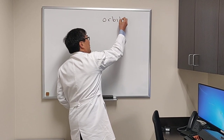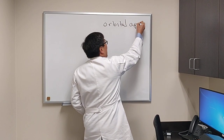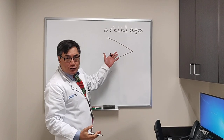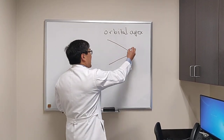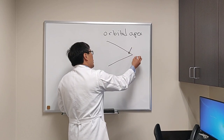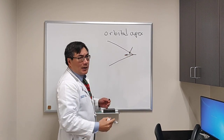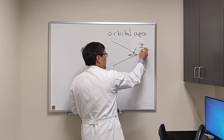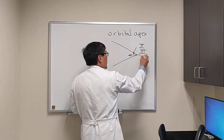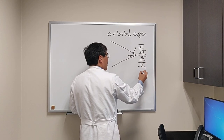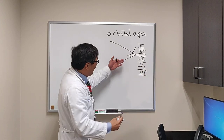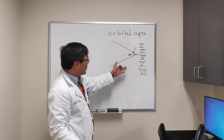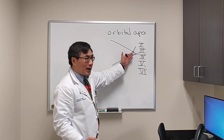Today we're going to be talking about the orbital apex syndrome. The orbital apex is shaped like an ice cream cone on its side, and the apex is here. The optic nerve has to pass through the optic canal, and the cranial nerves — in addition to the optic nerve (number two), three, four, five subdivision one, and six — all have to pass from the intracranial cavity into the intraorbital compartment through the superior orbital fissure and through the optic canal.